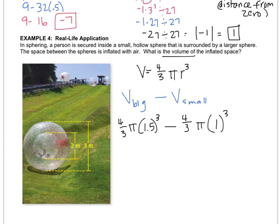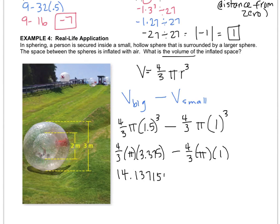So now we just grab a calculator, and we plug it in. Make sure you follow your order of operations. Exponents will come first. So that's 4 3rds times pi times 3.375 minus 4 3rds pi. Well, I could do 1 cubed in my head. That's just 1. So now we do multiplication comes next. So 4 3rds times pi times 3.375 is, I'll do a couple decimals, 14.137155 minus 4 3rds times pi times 1, 4.18878667. I'll round my final answer in a moment.